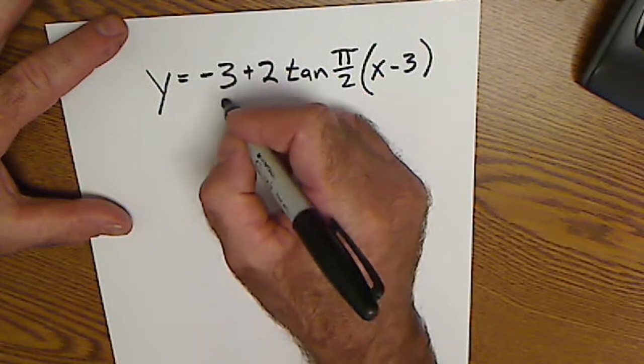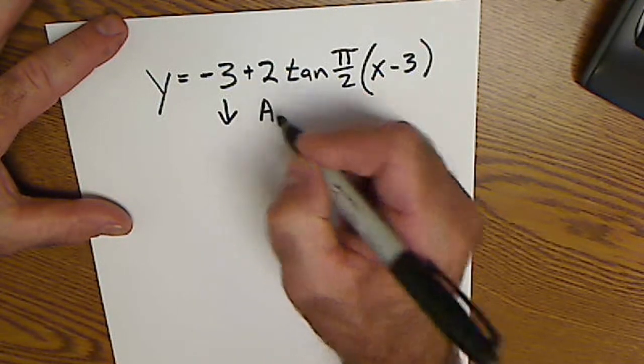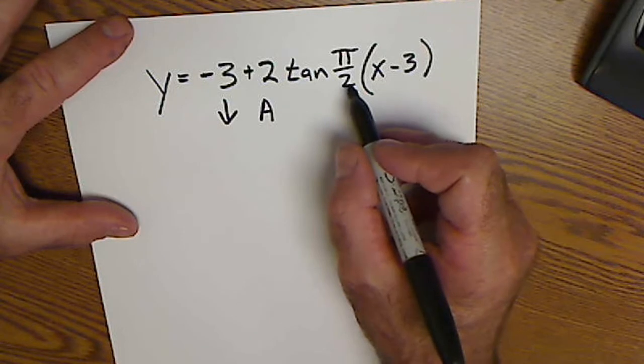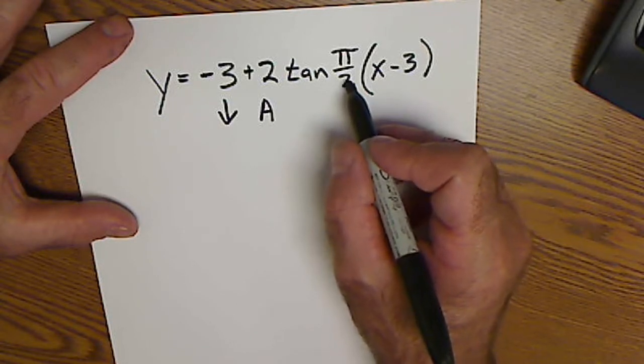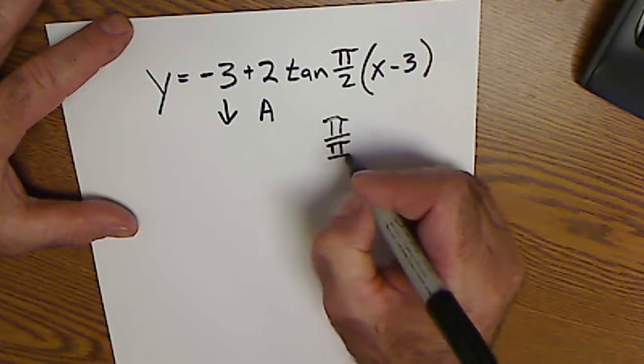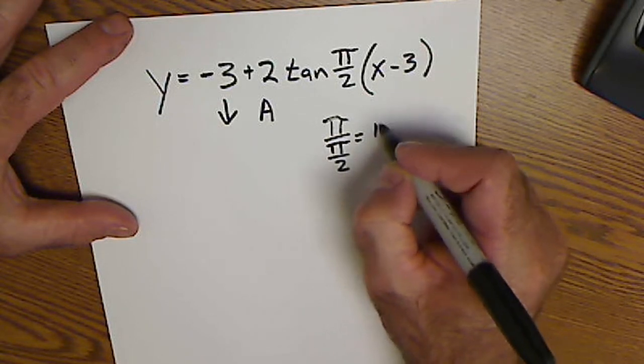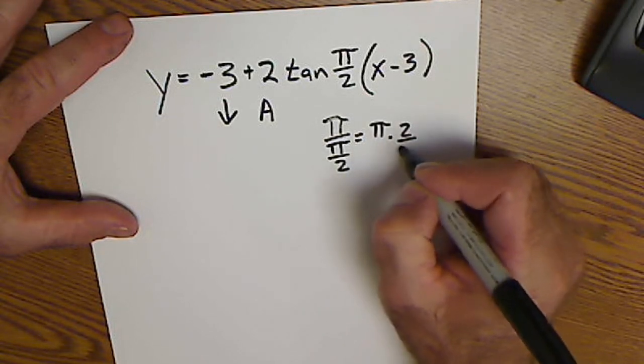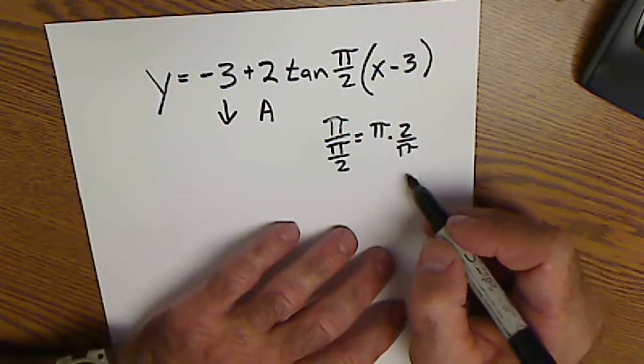Again, mark up my equation. I shift down 3, amplitude is 2. Period is not 2pi but pi. I do pi divided by pi over 2, which is pi times 2 over pi. Dividing is multiplying by the reciprocal.